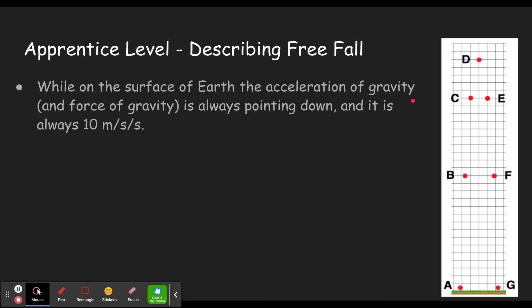While on the surface of the earth, the acceleration of gravity, and therefore force of gravity, is always pointing down. And it is always 10 meters per second squared. So never tell me that the acceleration is increasing or decreasing. At every single point, it is 10 meters per second down. Sometimes you'll call that negative 10 meters per second.